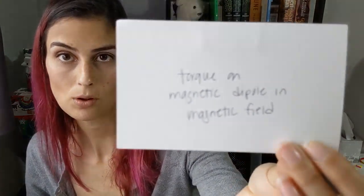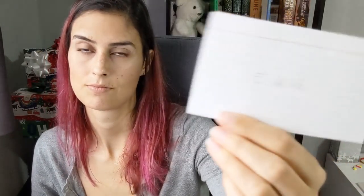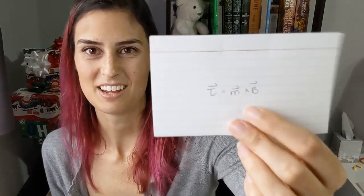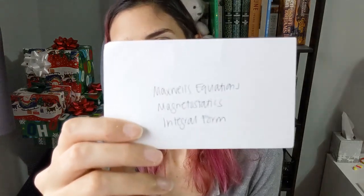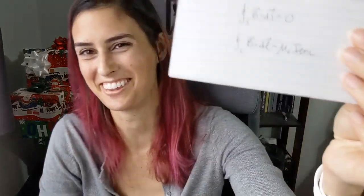The torque on a magnetic dipole in a magnetic field: torque equals m cross B, where m is the magnetic dipole moment vector and B is the magnetic field. Maxwell's magnetostatics equations in integral form: the surface integral of B dot dS equals zero, and the closed loop integral of B dot dl equals mu naught I enclosed.